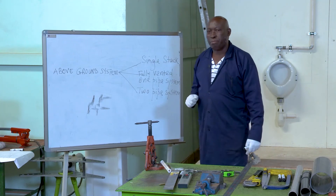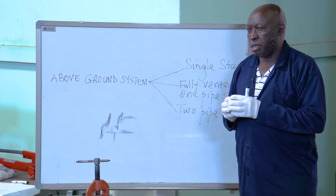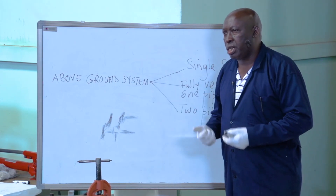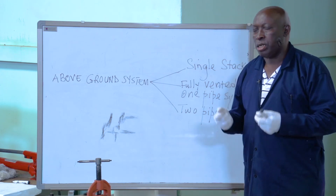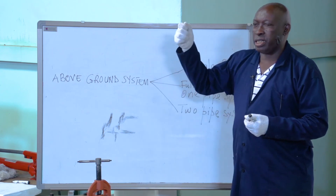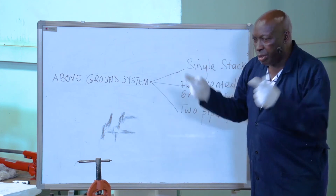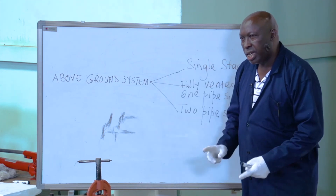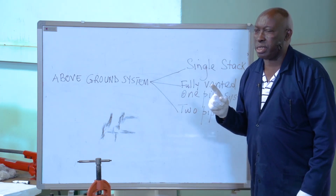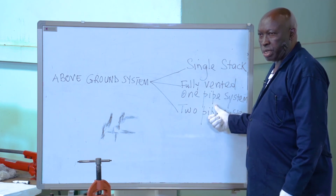The fully vented one pipe system means that all waste is combined together in one pipe. However, because of problems such as loss of trap seals that we studied previously, you must ensure that this system is vented. A second smaller stack is used for venting or ventilating the system, which is why it is called the fully vented one pipe system.